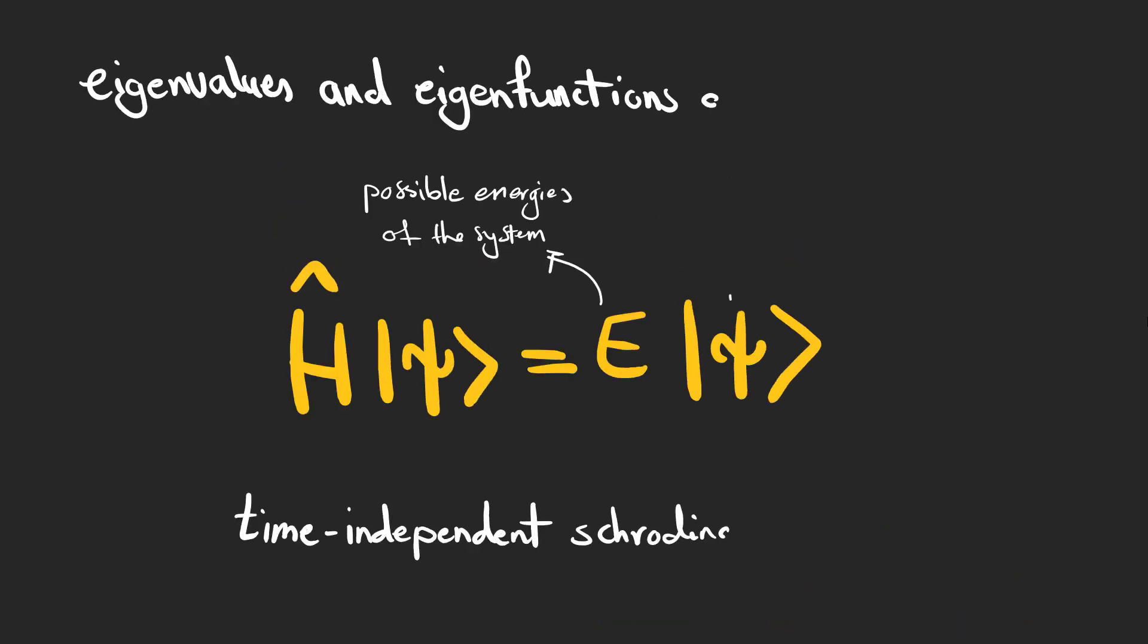As an example, if you want to find the eigenvalues and eigenfunctions of the Hamiltonian, we need to solve this equation, which is the time-independent Schrödinger equation, and eigenvalues are possible energies for the system.